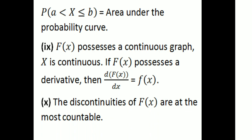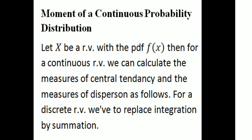The discontinuities of F(x) are at most countable. Now, moments of a continuous probability distribution. For a continuous random variable, we can calculate the measure of central tendency and the measure of dispersion. For a discrete random variable, we replace integration by summation. For a continuous random variable, we use integration instead of summation.